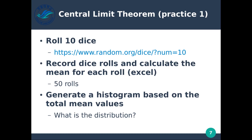I want you to try to do this yourself — I think we can all guess what the distribution is going to be. Try rolling 10 dice, look at their distribution, then roll 10 dice again, calculate the mean for each roll, and think about what the distributions would be. I urge you to at least practice this; it will really help bring home what the central limit theorem does for our distribution.